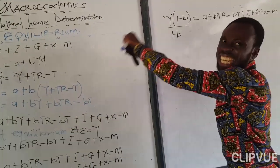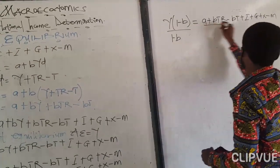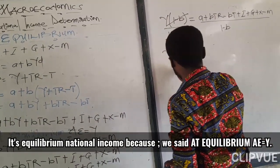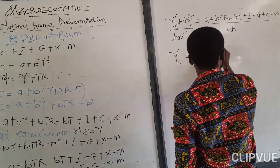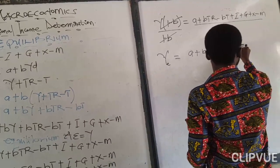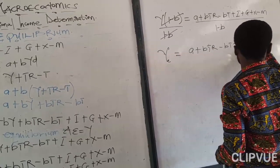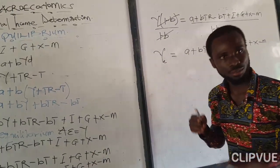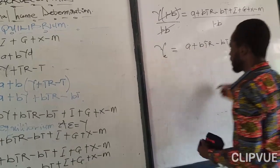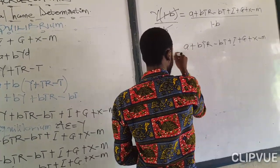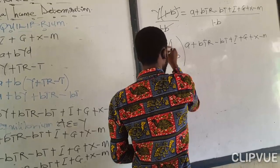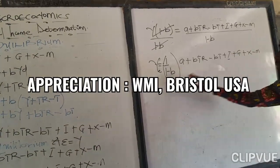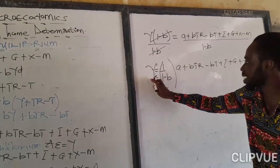We divide both sides by 1 minus B because we want to make income the subject — that is why this is called national income determination. So equilibrium national income equals A plus BTR minus BT plus investment plus government spending plus export minus import, all over 1 minus B. For mathematical presentation, I bring it as 1 over 1 minus B multiplied by the bracket.